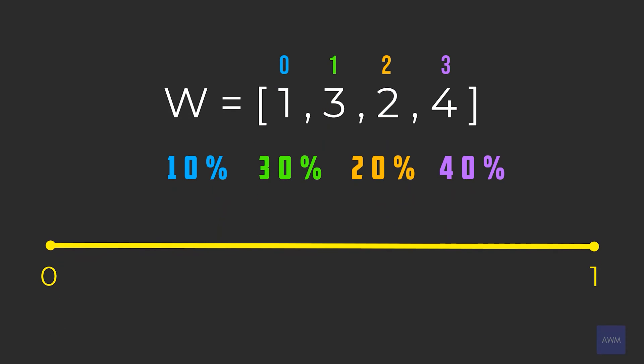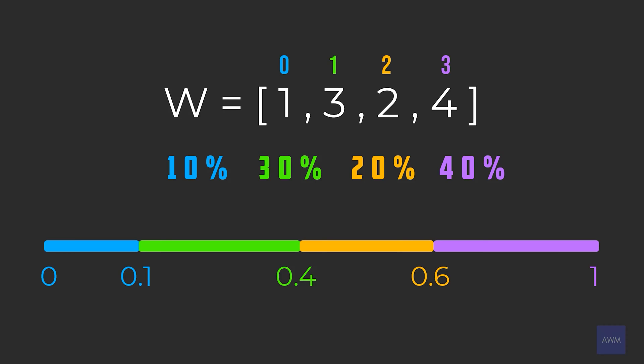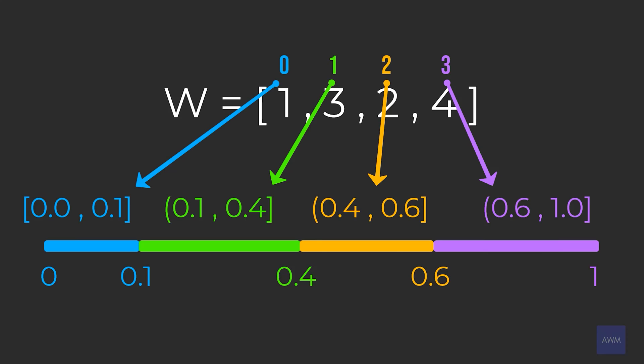Now let's say we had a number line from zero to one. Index zero would take up the range 0 to 0.1. Index one would be 0.1 to 0.4 (exclusive on the left). Index two would be 0.4 to 0.6, and index three would be 0.6 to 1. To select an index randomly, all we have to do is use a random decimal generator between 0 and 1 — whatever value is generated corresponds to one of these ranges.